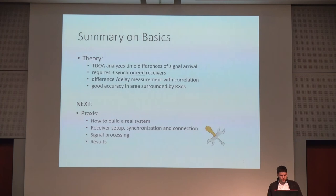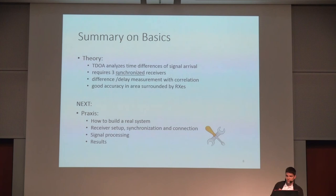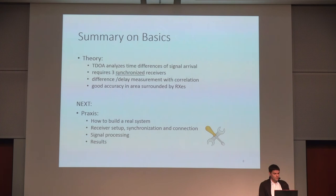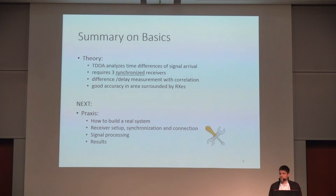Let's go to the first summary. TDOA analyzes the time difference of signals arriving at different receivers. We require three synchronized receivers. The delay measurement is done with a correlation function. For good accuracy, the transmitter should be located in the area between the receivers. Next is the practical section, where we'll see how to build a real system covering receiver placement, synchronization, connection, signal processing, and results.